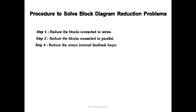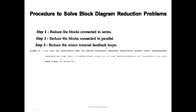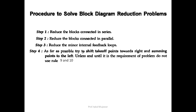Step number three: reduce the minor internal feedback loop. Step number four: as far as possible, try to shift the takeoff point towards the right and summing point toward the left, by which we can convert the block diagram into a minor internal feedback and apply rule step number three. Unless it is required by the problem, do not use rule number nine and ten. If required, then we need to use nine and ten.